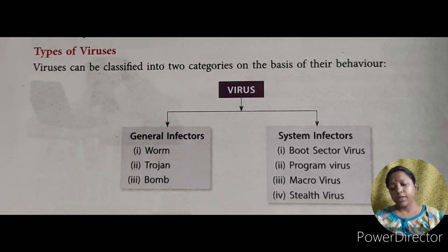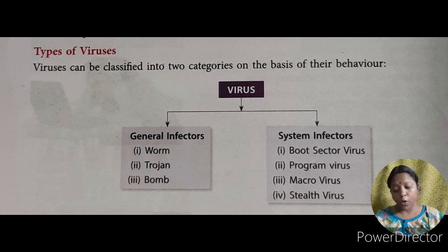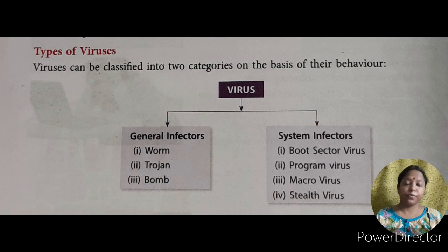The next topic is types of viruses. Viruses can be classified into two categories on the basis of their behavior: general infectors and system infectors. General infectors are further classified into worm, trojan, and bomb. System infectors are further classified into boot sector virus, program virus, macro virus, and stealth virus. That's all for this video. In the next video we will discuss these types of viruses in detail.